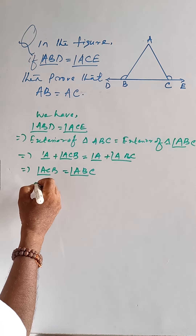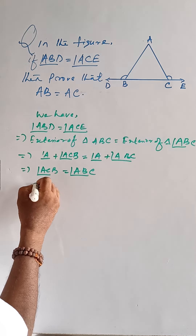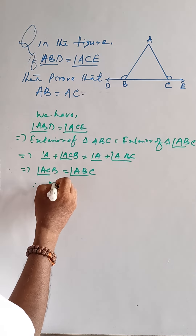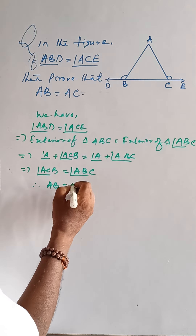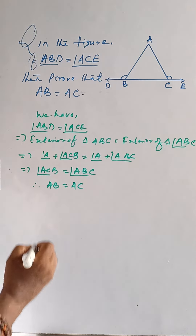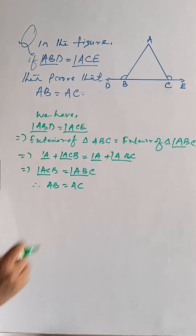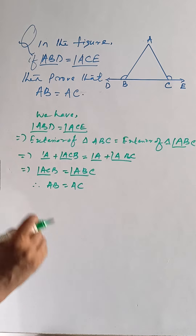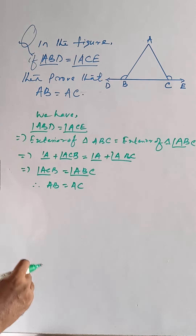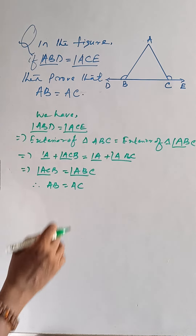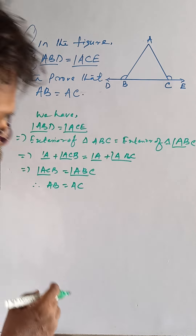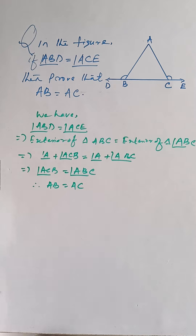Then AB is equal to AC, since sides opposite to equal angles of a triangle are equal. Hence proved.